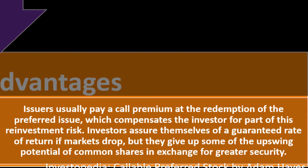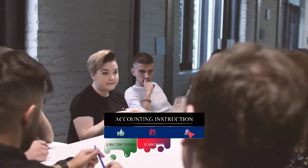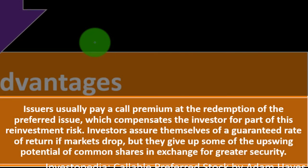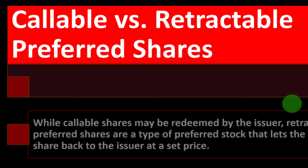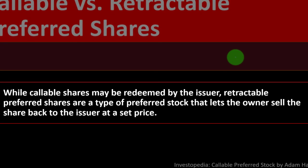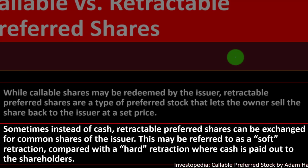When the shares are called, the issuer pays back with something of a premium to compensate, similar to the costs of refinancing a home. Investors get a guaranteed rate of return if markets drop, but give up some of the upside potential of common shares in exchange for greater security. Callable versus retractable preferred stock: while callable shares may be redeemed by the issuer, retractable preferred shares let the owner sell the share back to the issuer at a set price. Sometimes, instead of cash, retractable preferred shares can be exchanged for common shares — referred to as a 'soft' retraction — compared with a 'hard' retraction where cash is paid out.